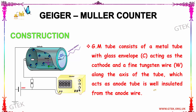The tungsten wire acts as the anode, and the tube is well insulated from the anode wire. The counter is connected to a power supply with a resistance maintained in the circuit.